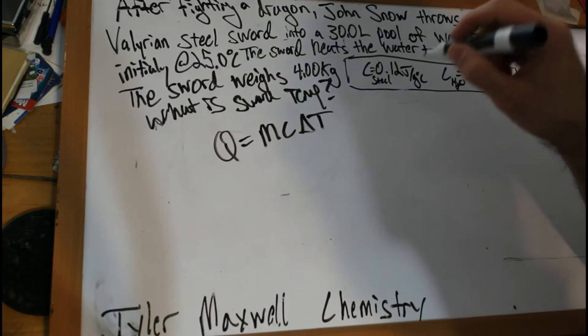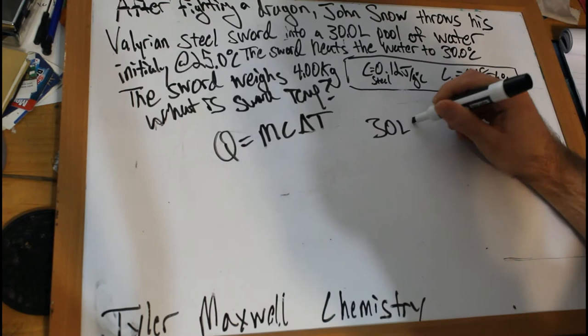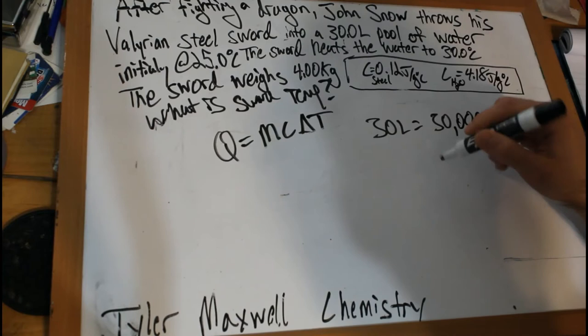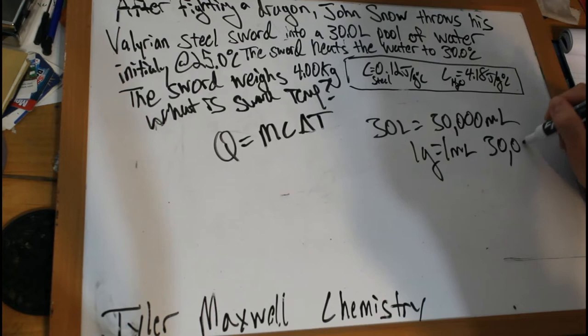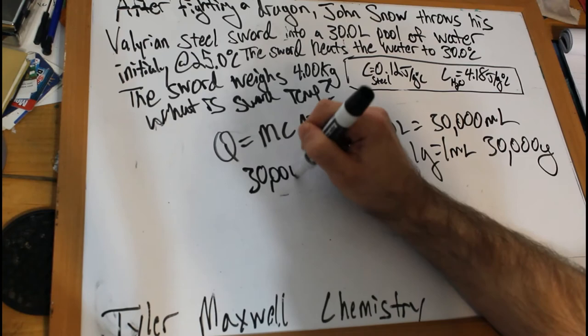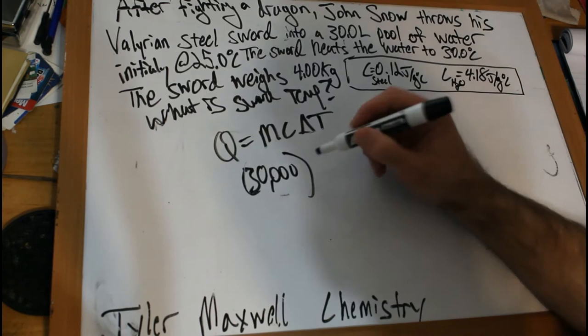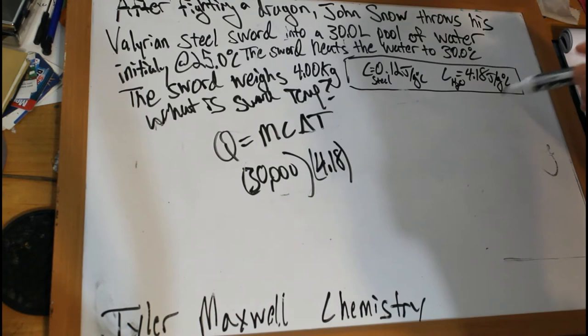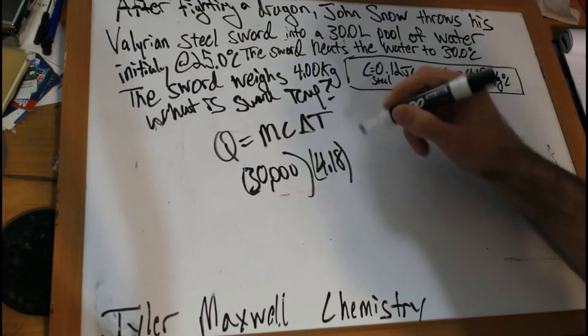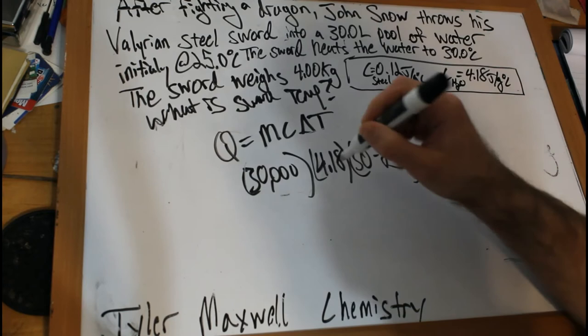So we can plug in our mass: 30 liters, so that's 30,000 milliliters, and at one gram per milliliter that's 30,000 grams. So our mass is 30,000, our c is just heat capacity for water, and then our delta t, change in temperature, so it went from 25 to 30, so 30 minus 25, so it's going to be equal to...